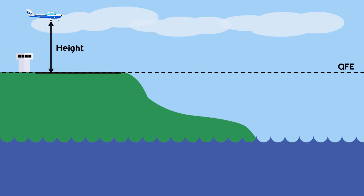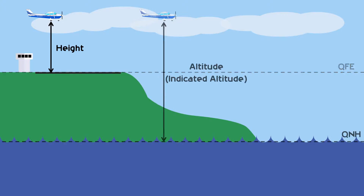With QFE set, the altimeter will read zero when the aircraft is on the ground. Altitude, sometimes referred to as indicated altitude, is indicated on the altimeter when its subscale is set to QNH. Altitude is defined as the vertical distance above mean sea level.